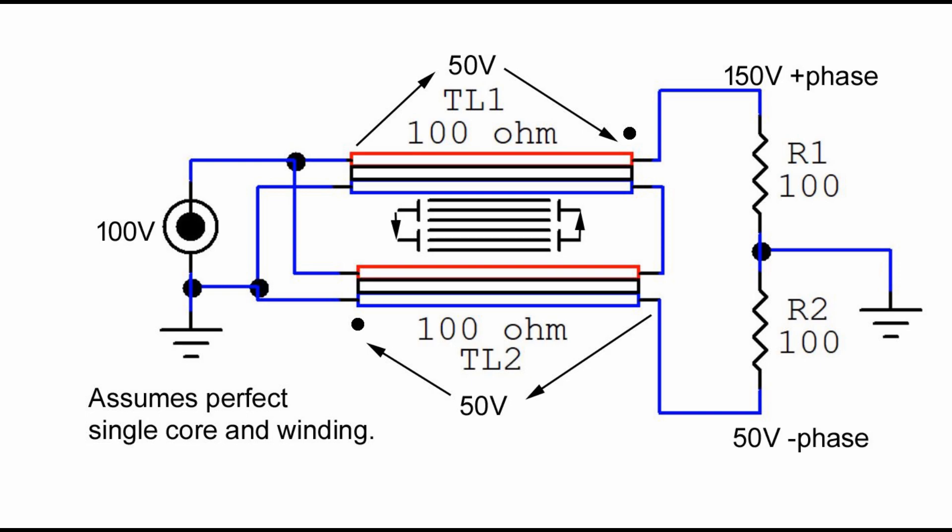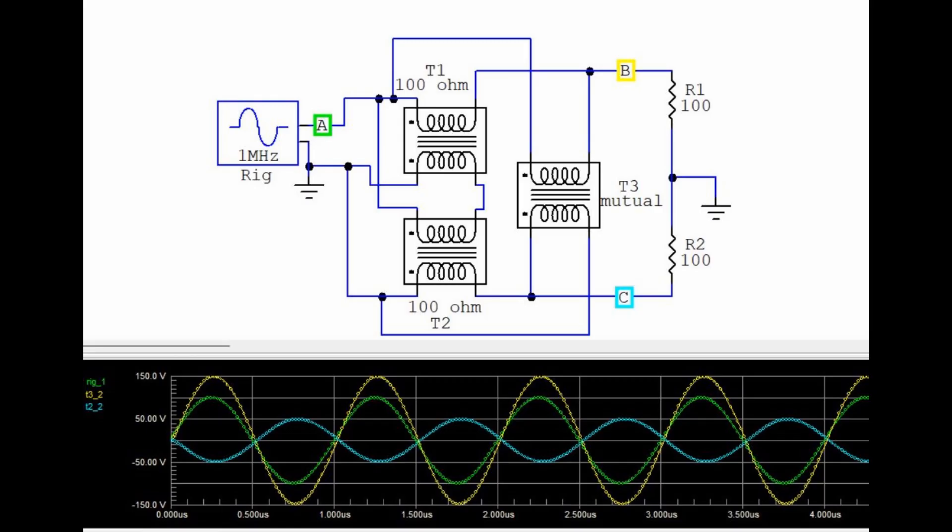So this is an actual SPICE model of the balun in question, the one that uses two transmission lines on a single core. In this model T1 and T2 are the two transmission lines and to simulate the mutual coupling caused by winding both of these transmission lines on a single core, T3 is a one to one ratio transformer that represents perfect mutual coupling between these two windings as they share the common core.